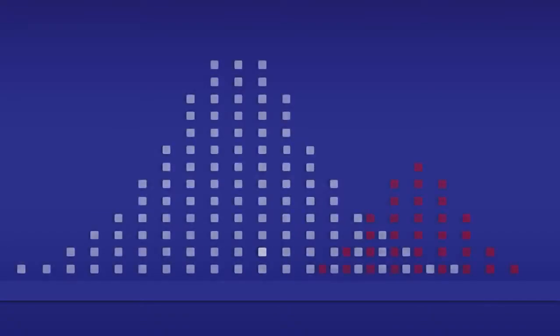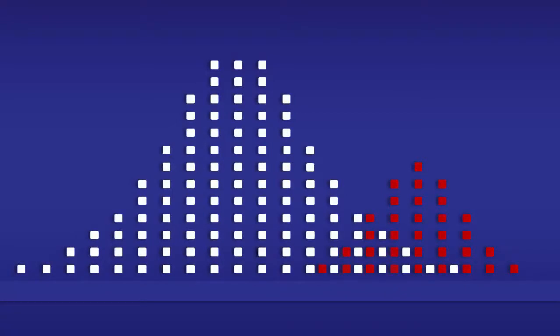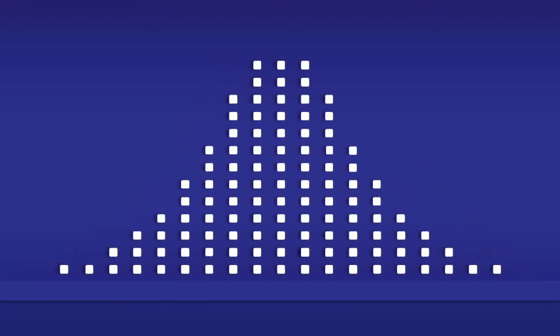To help us understand this equation, we are going to imagine that a group of people are being tested for a condition. These white squares represent individuals without it, and the red squares represent individuals with it. Since the false positive rate only takes into consideration people without the condition, we are going to focus on the white squares.